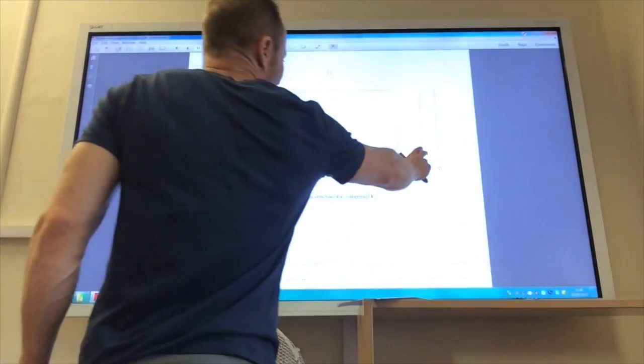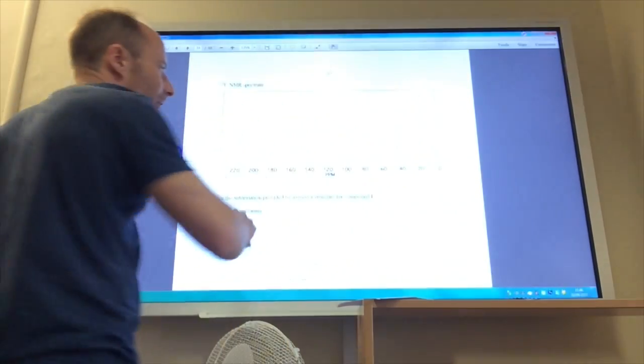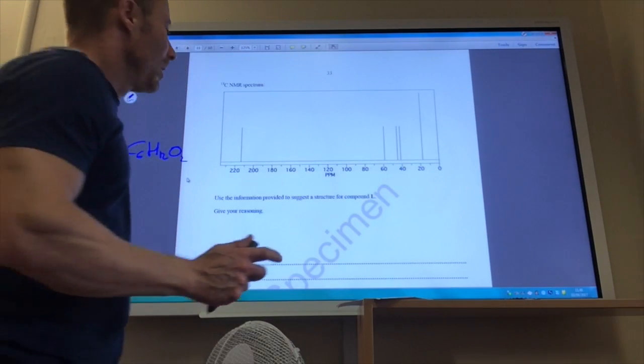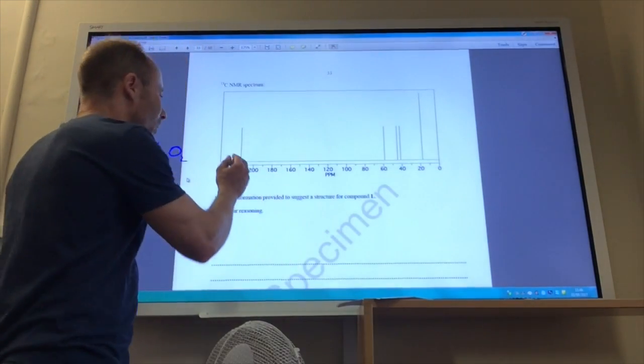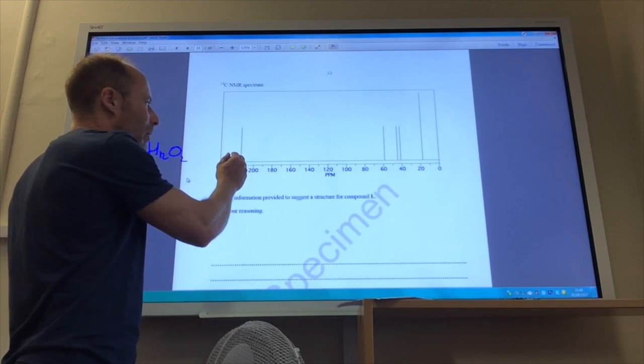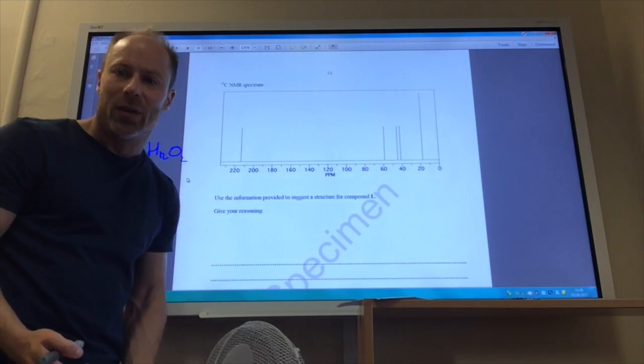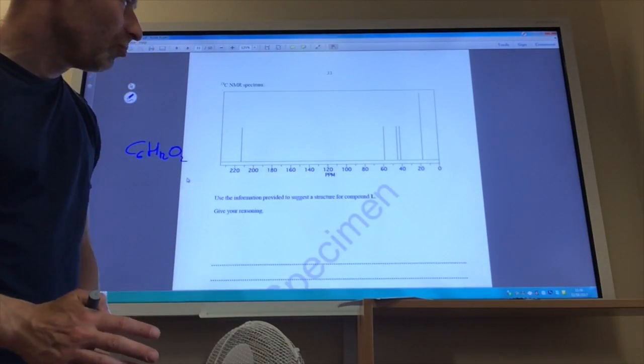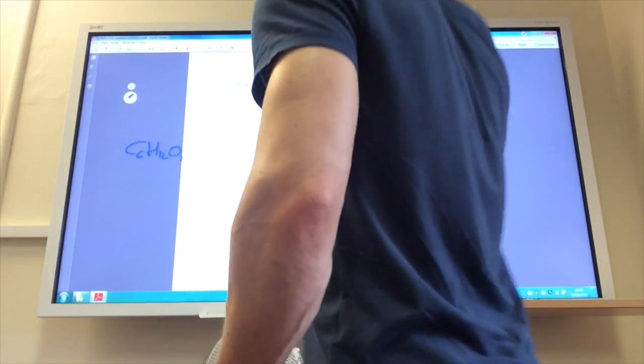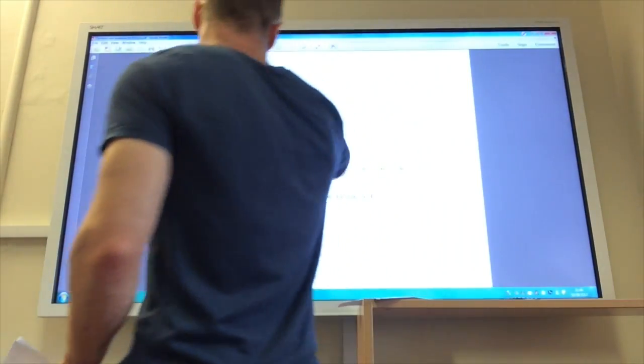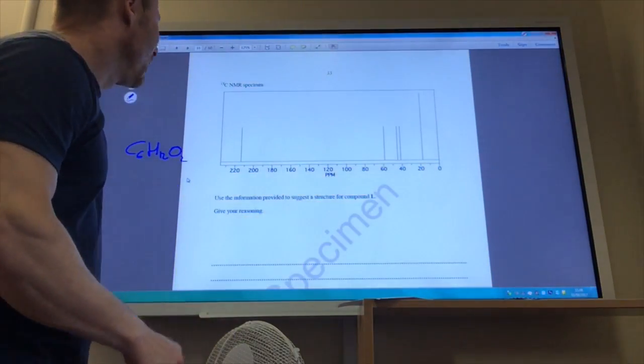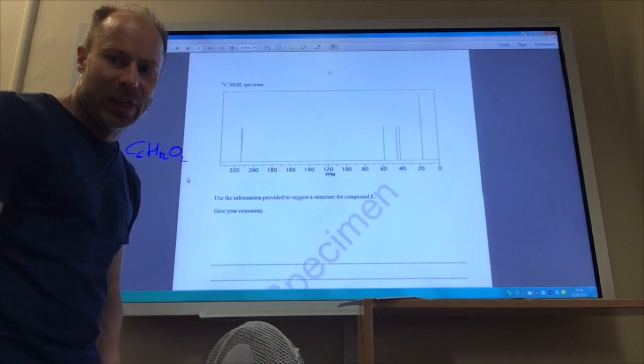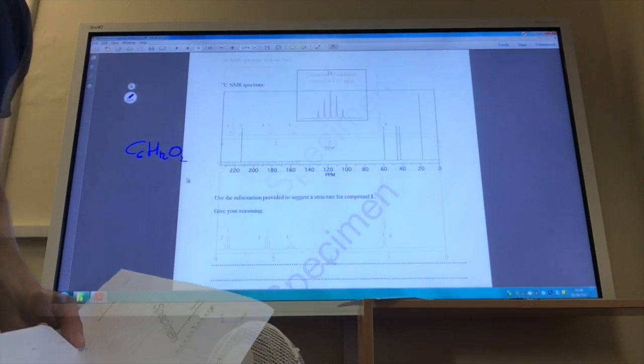Now I'm going to skip across to the carbon-13 NMR. If you have a look at this, I have got one, two, three, four, five peaks. So I've got five carbon environments. But let's have a look. This one, I've got C double bond O. So I have got a carbonyl in there, so that's quite important. The rest isn't really that important in terms of the chemical shifts, but it is telling me I've got C double bond O because I've got a peak at around about 213 ppm.